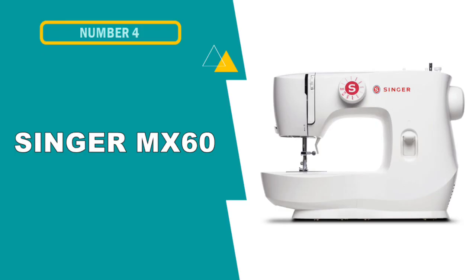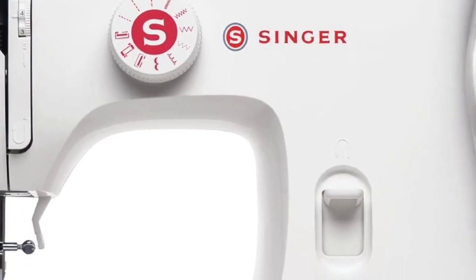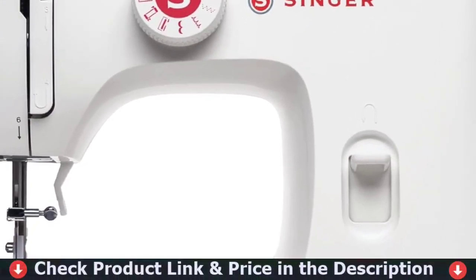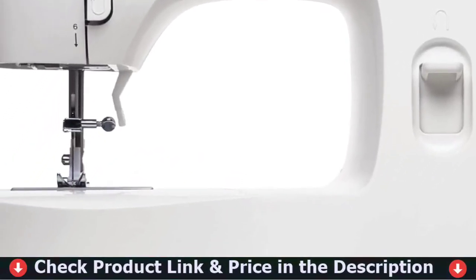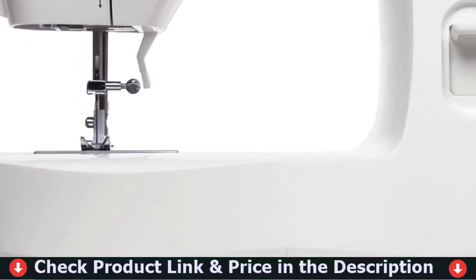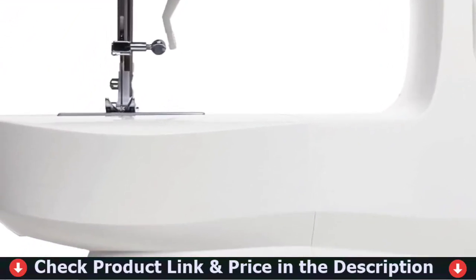Fourth pick in this best home-use sewing machine list is Singer MX-60 Sewing Machine. The MX-60 Sewing Machine is lightweight and portable, making this one a great choice for taking to sewing class or for sewing in smaller spaces. Thanks to preset stitch length and width, even beginners will find this machine super easy to use.